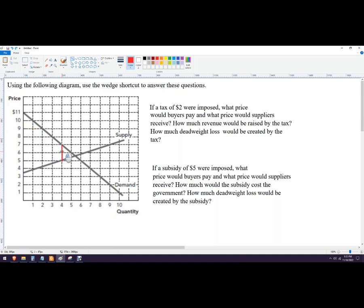So that would be right here. You could definitely do that. So that would be our wedge shortcut, and so we're knocking the price up here. So the price that the buyers would pay would be $7.